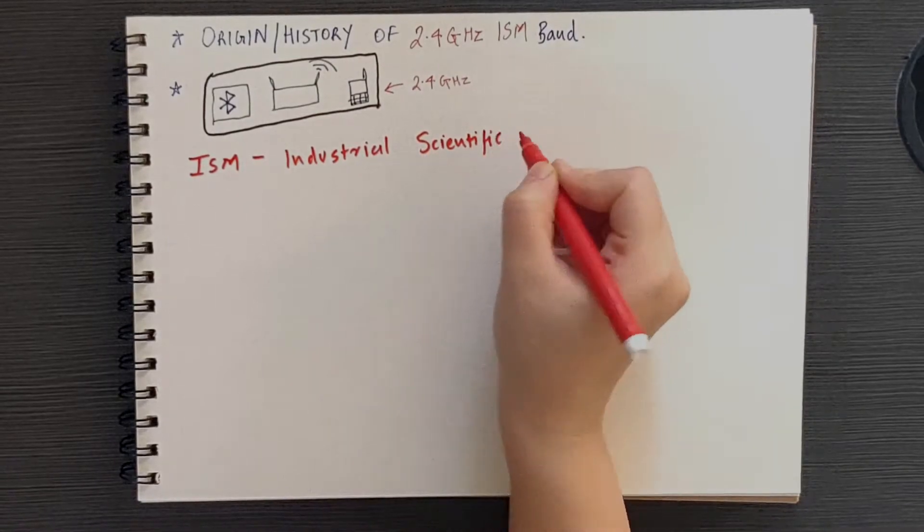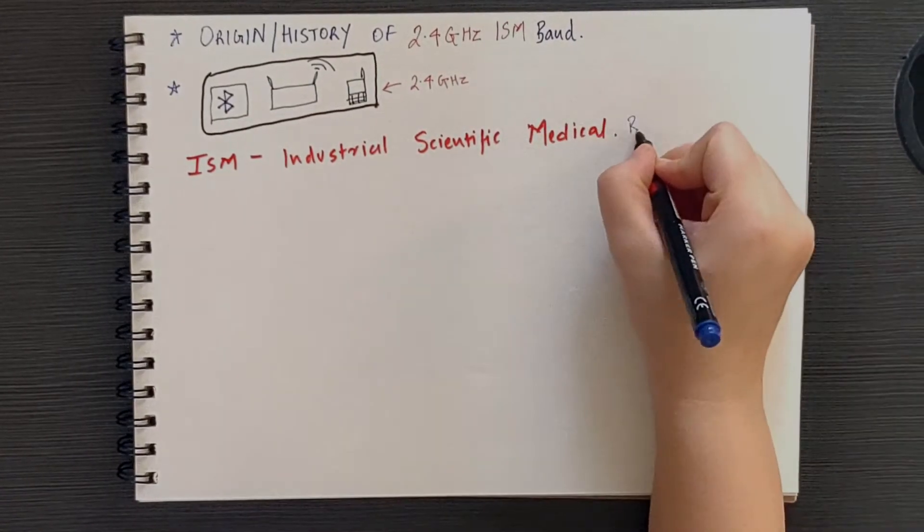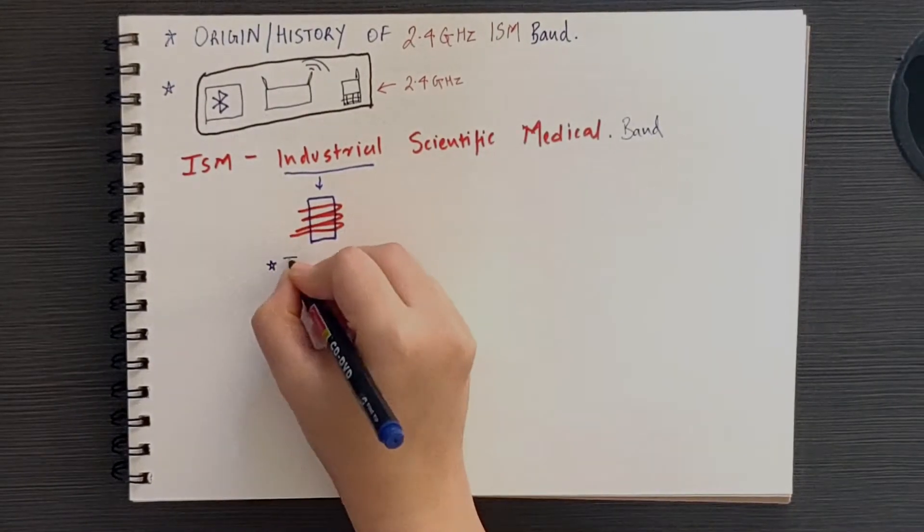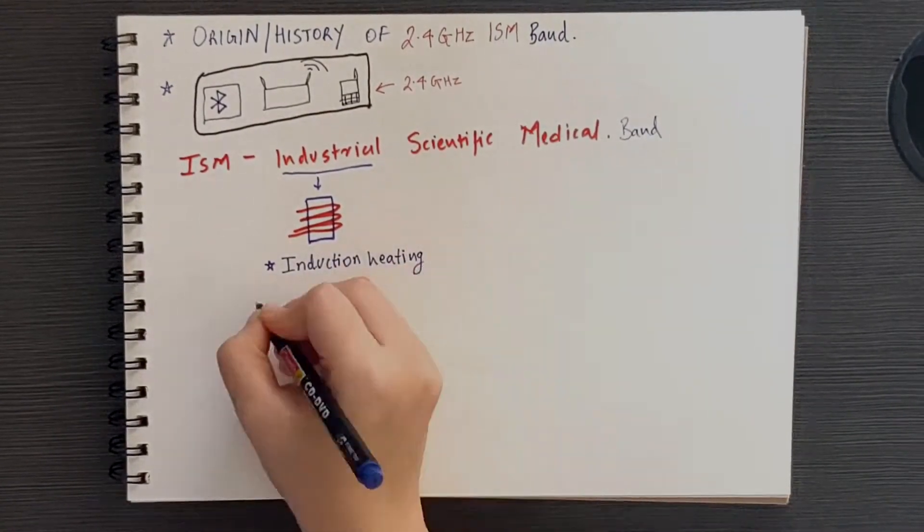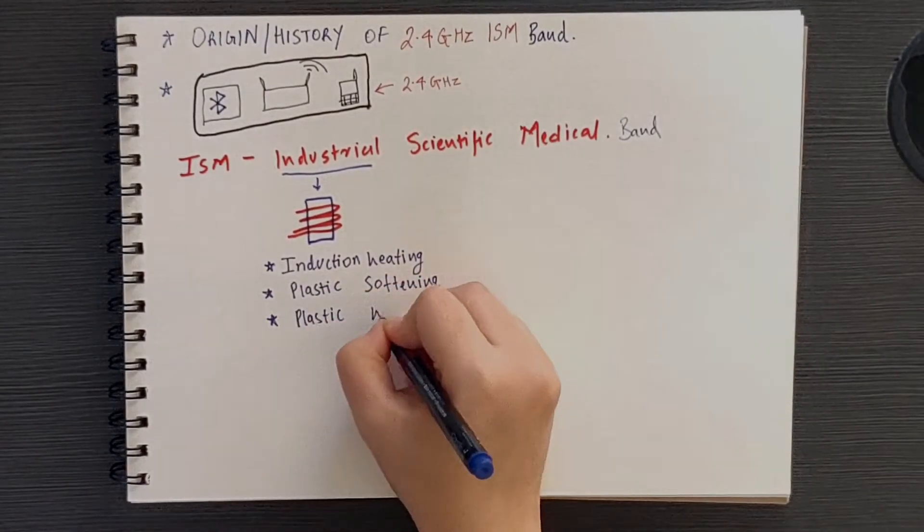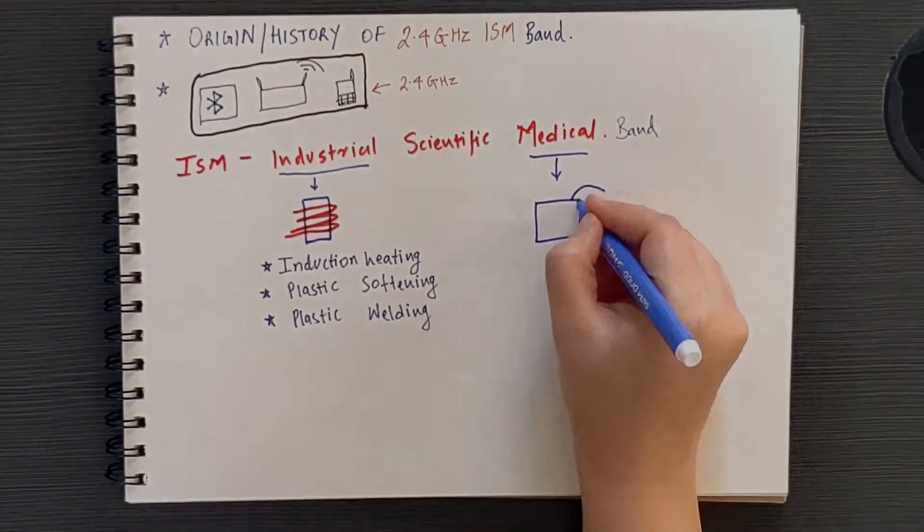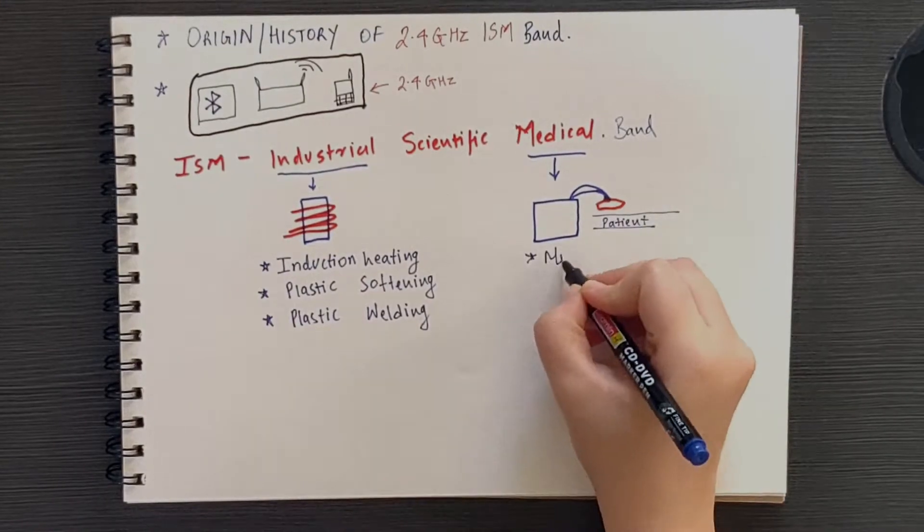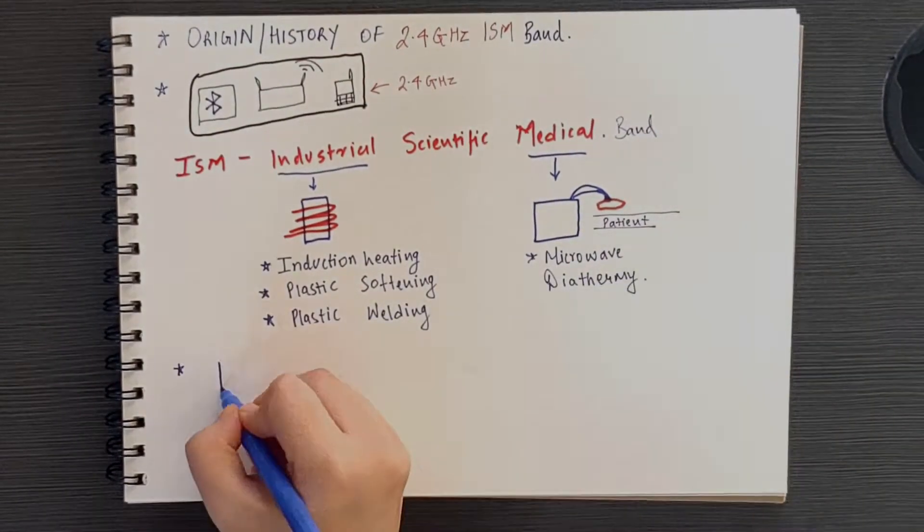So first of all, what is ISM? ISM stands for Industrial, Scientific and Medical Band. Industrial application involves induction heating, plastic softening and plastic welding. Medical application includes microwave diathermy. The most commonly encountered ISM device is the microwave oven.